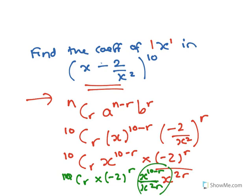If I now subtract the indices, because that's division, I get 10Cr minus 2 to the r, x to the 10 minus 3r.